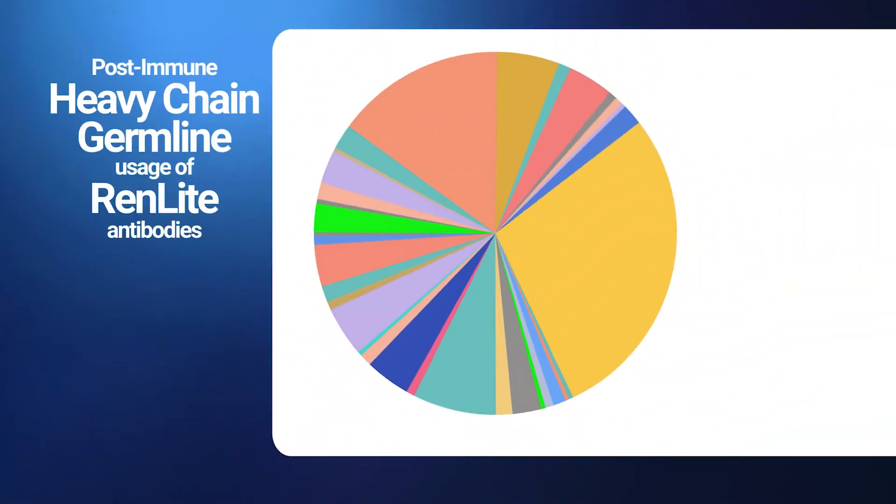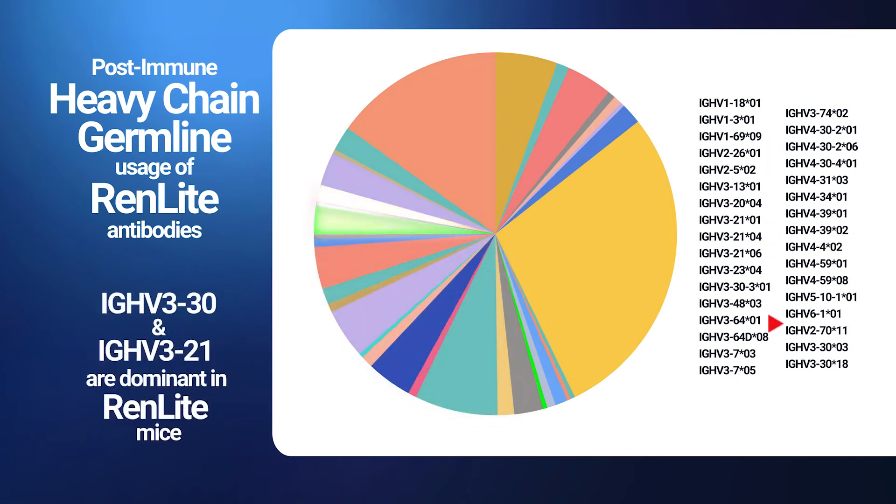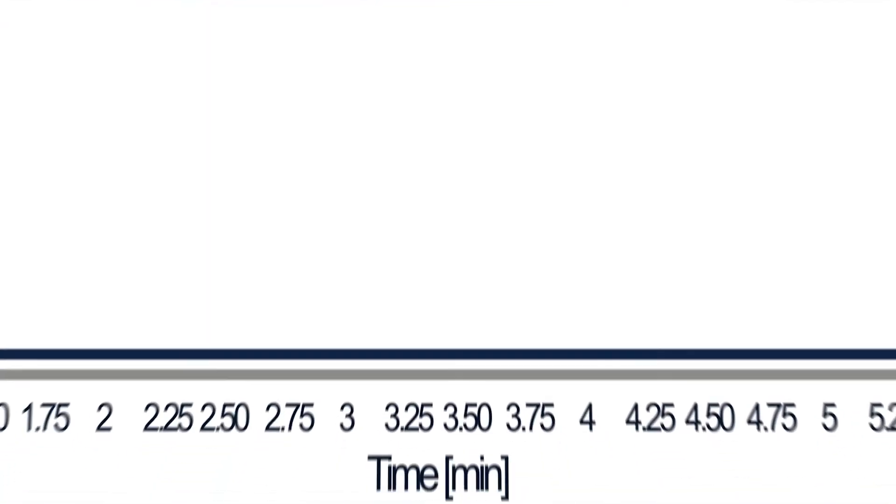RUNmite mice, like their RUNmab counterparts, maintain robust heavy chain diversity and are capable of generating hundreds of high-affinity antibody hits for downstream screening. RUNmite-derived antibodies exhibit solid developability properties, including desirable purity and stability profiles.